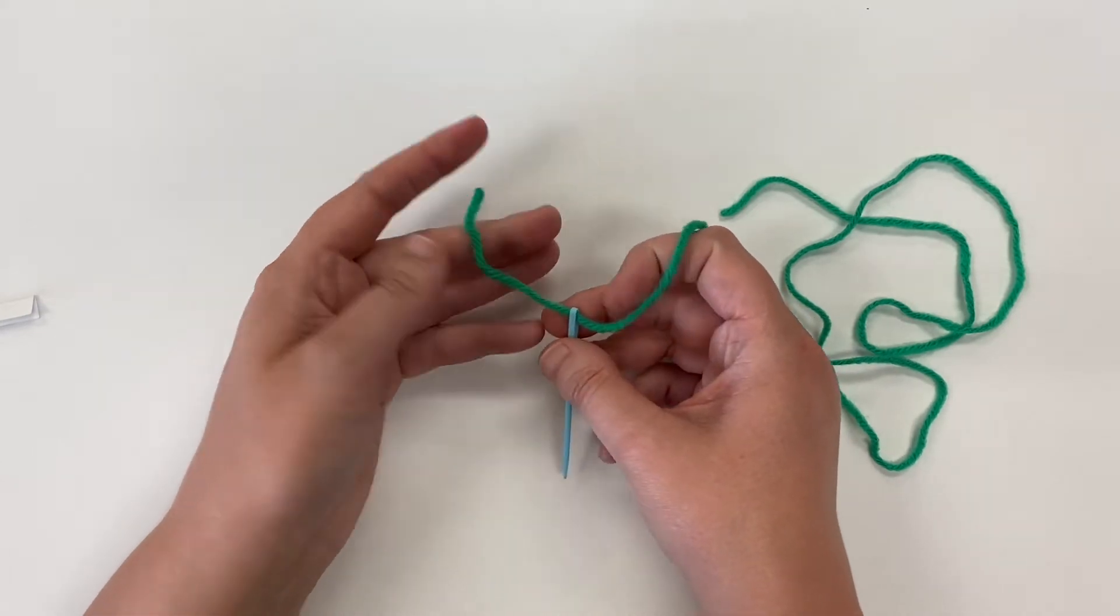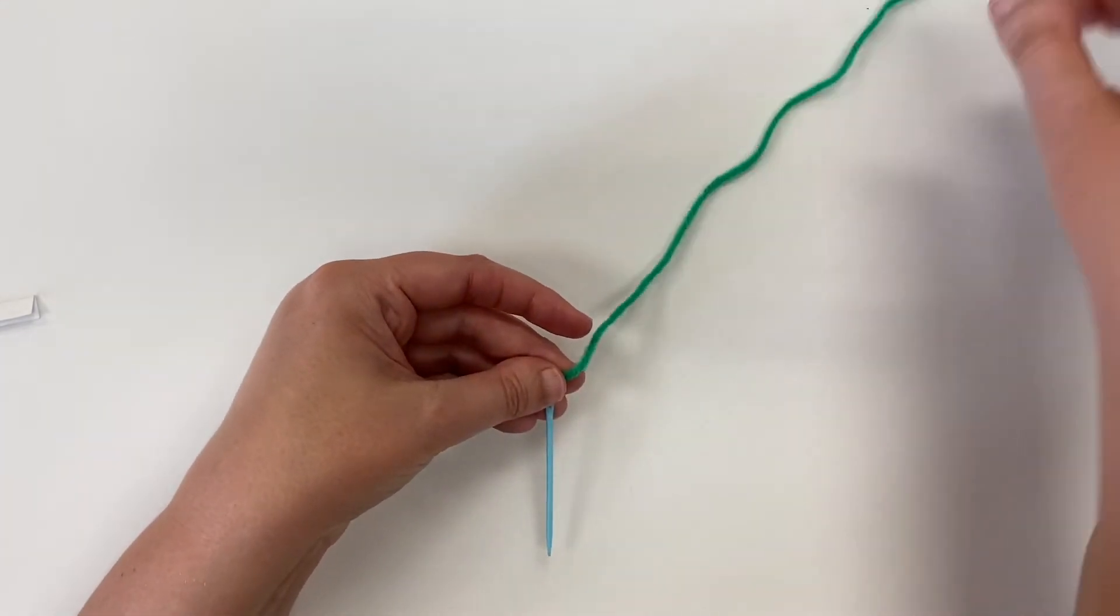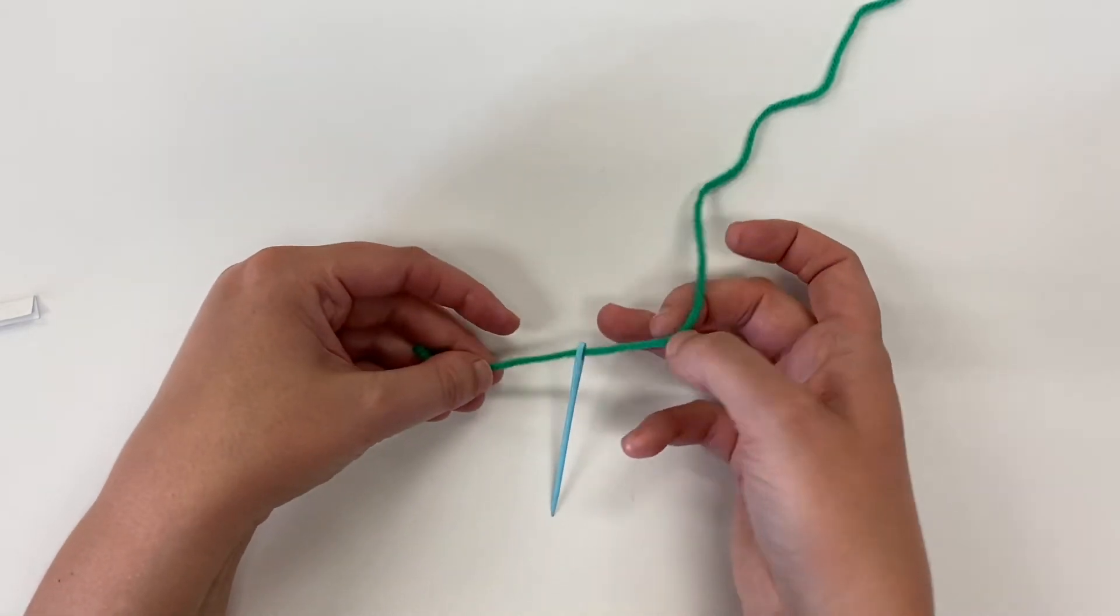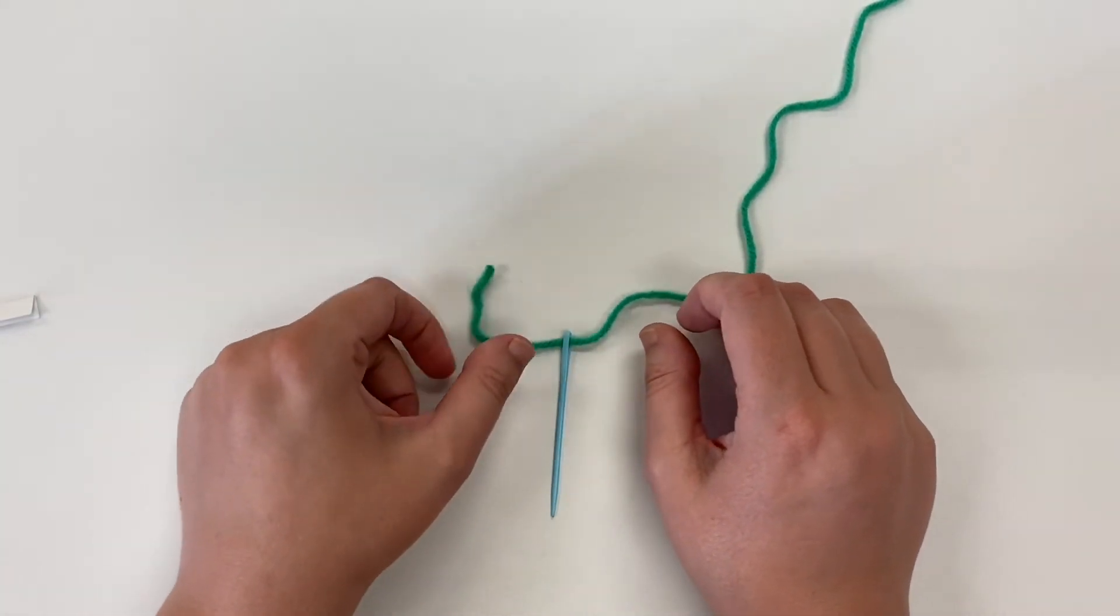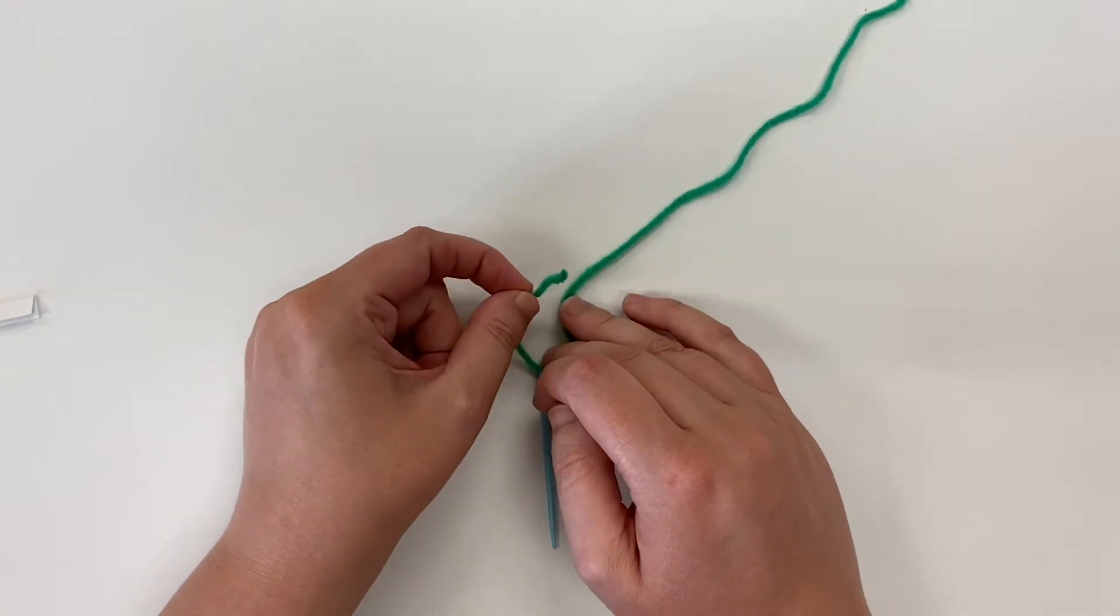So what I'm going to do is pull it a little bit like that so I've got two sides. I've got my long side right here and then I have my short side right here. What I want to do next is make an X.